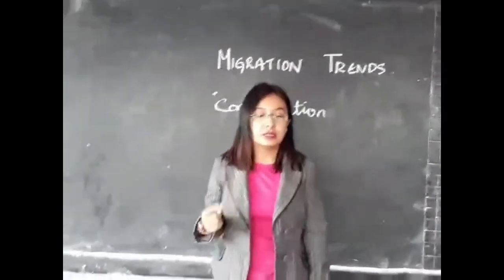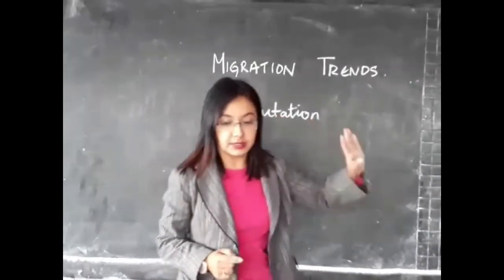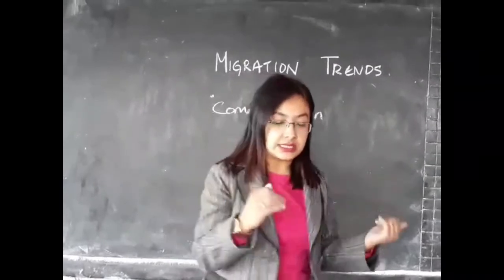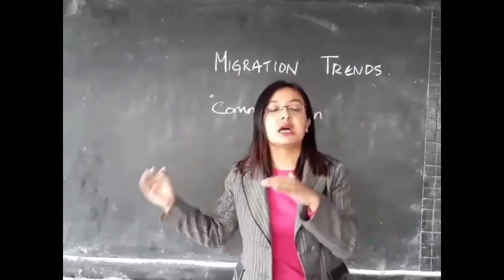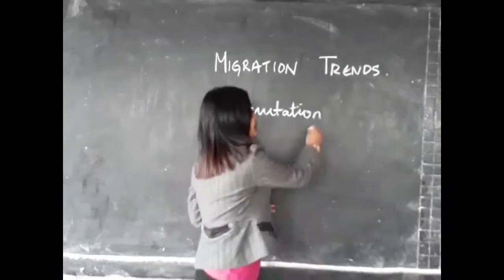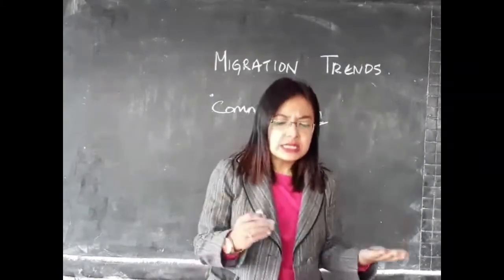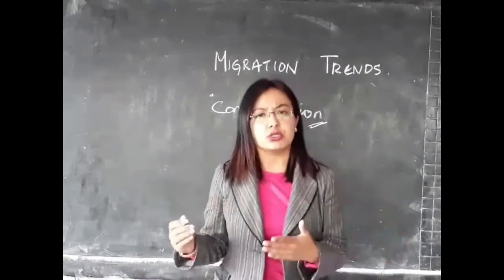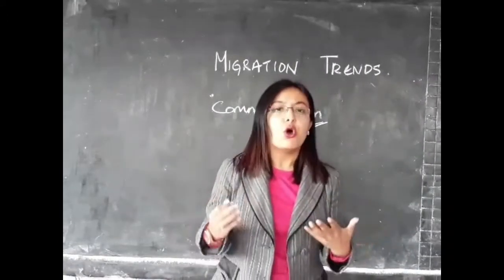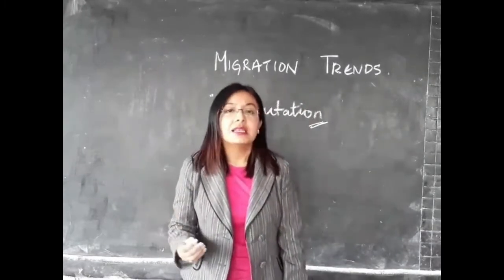The next concept is commutation. Movement of people between two cities, or to a city from surrounding rural areas, is considered as commutation. Mostly people commute to urban areas for either earning a livelihood or for a better standard of living.